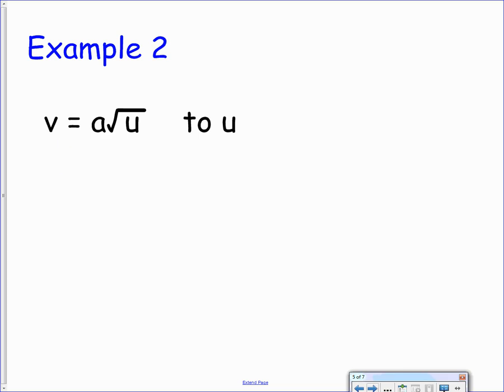Example number two. So we have v equals a times the square root of u, and we're looking to change the subject to u. So identify your u term first of all as underneath the square root. The first thing that's happened to that there is we're taking the square root. We're then multiplying it by a. So we want to undo both of these things by doing opposites.